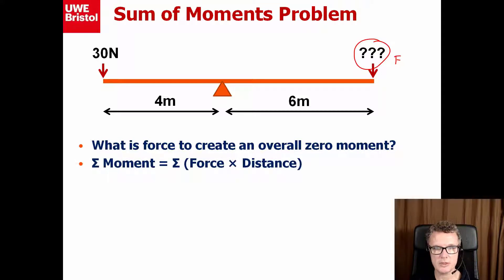So we need to sum up all the forces that we can see. Remember our convention: forces going clockwise will be positive, and forces going anticlockwise will be negative. So the one on the right, we have 6 times F, and